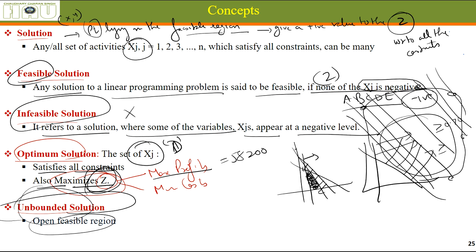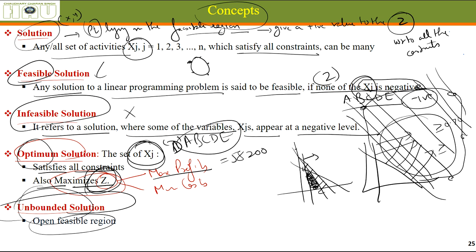An unbounded solution occurs when there is an open feasible region. In our problem, most lines indicated inward movement, creating a bounded feasible region. But if the labor constraint also had a greater-than-or-equal-to sign, we would look outward and there would be no bounded region. We could keep moving the objective function line further and further, and revenue would increase without end — that is an unbounded solution because the region is unbounded.